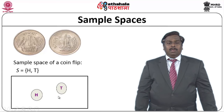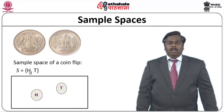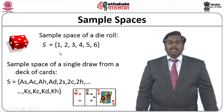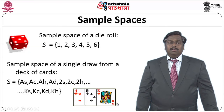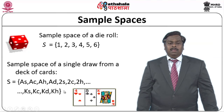Let us understand sample space with examples. Consider a coin — a coin will have head or tail, so the sample space for a coin flip will have two outcomes: head and tail. Consider a dice — the sample space for a die roll will be the numbers ranging from 1 to 6. Or we can take a deck of cards: the sample space for a single draw will include ace of spade, ace of clover, ace of heart, ace of diamond, then cards with number 2 in spade, clover, heart, diamond, and so on, all the way to king of spade, clover, diamond, and heart. This entire set constitutes the elements of our sample space.